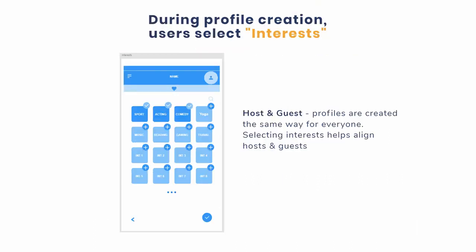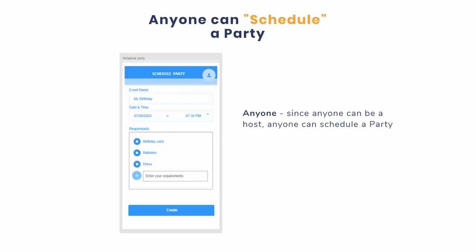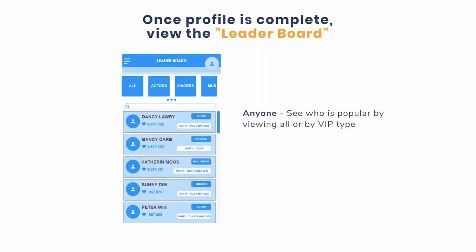During the sign-up process, users are asked to select a few interests to better align hosts and guests. While creating your profile, you are given the opportunity to schedule a party. Once your profile is completed, you can see which VIPs are most popular or sort by type of VIP.